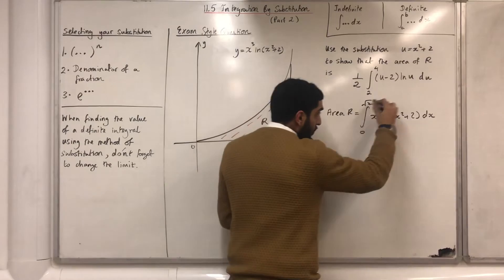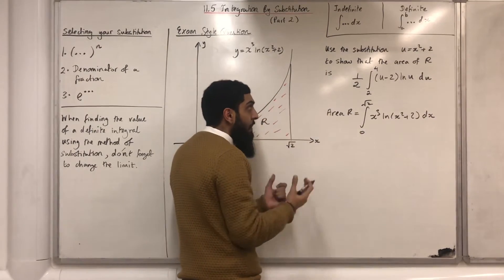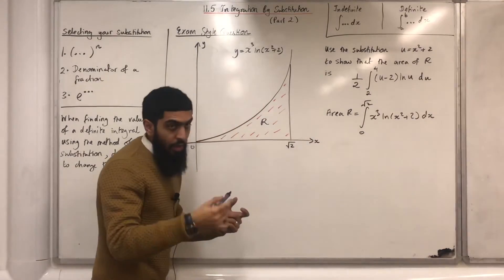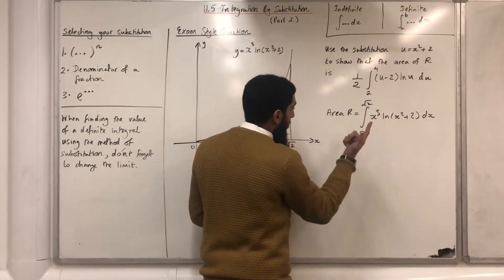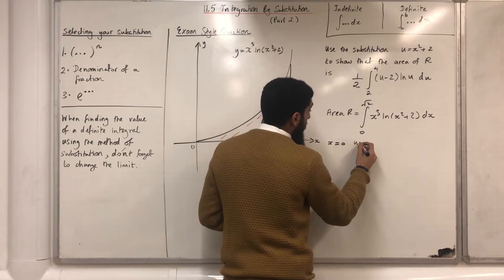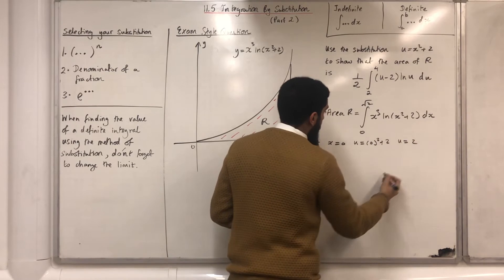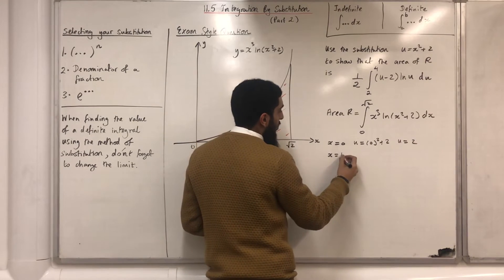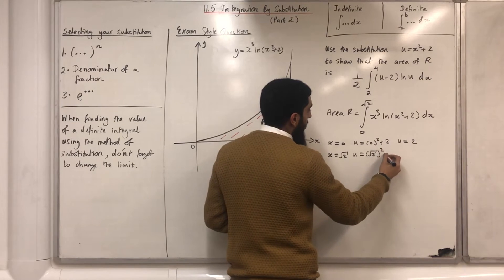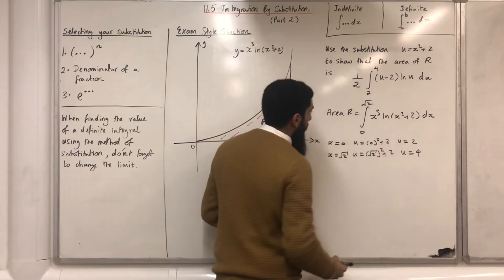Our next step is to reduce this integral into terms of u to match the required form. We change the limits: when x = 0, u = 0² + 2 = 2; when x = √2, u = (√2)² + 2 = 4. Therefore, the area R is given by the integral from 2 to 4 of x³ · ln(x² + 2), where x² + 2 is replaced by u, dx.